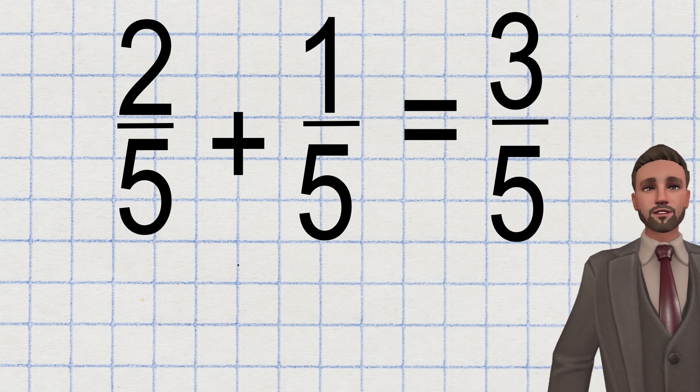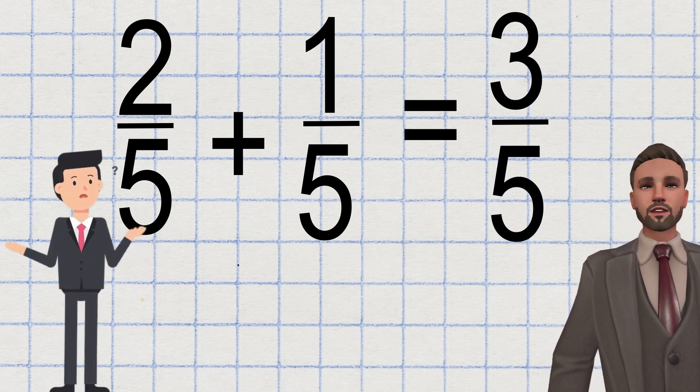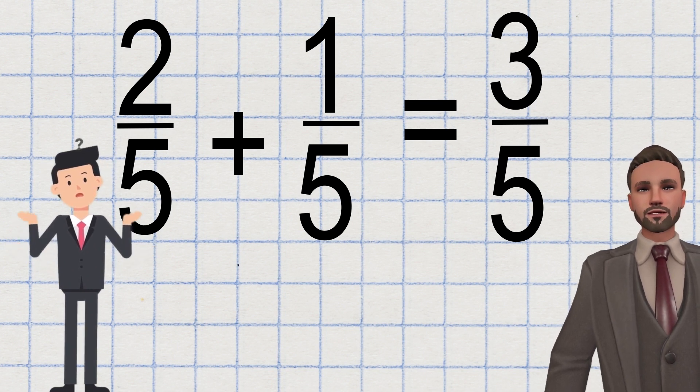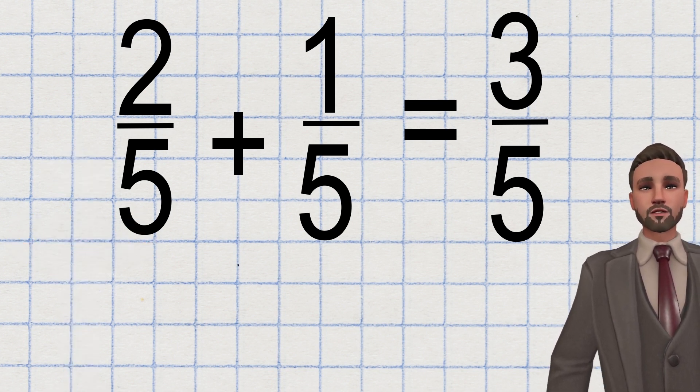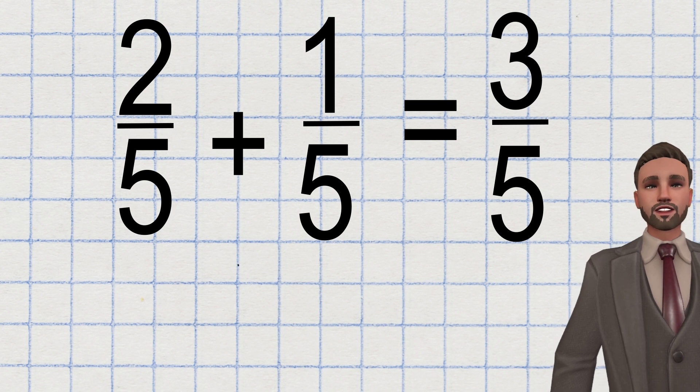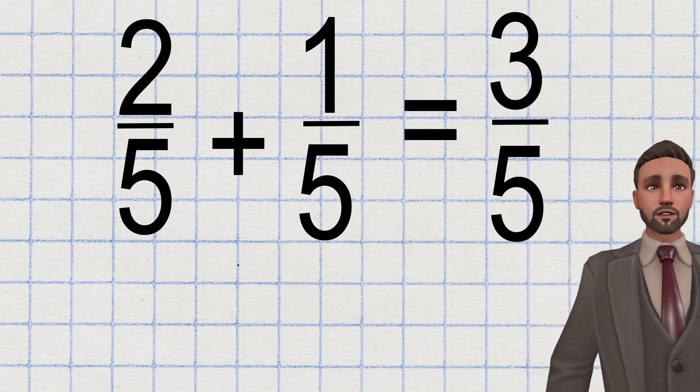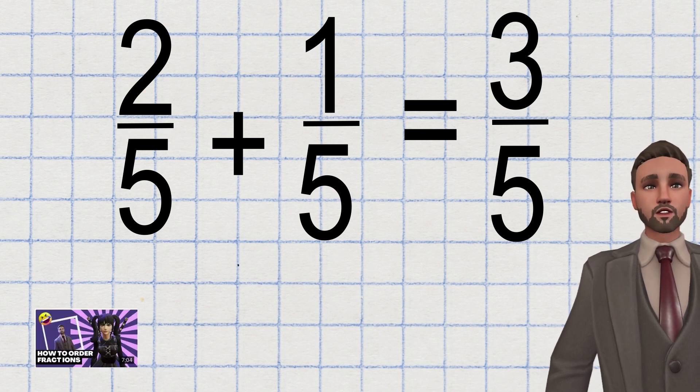giving an answer of three fifths. Some people ask, why don't you add the denominators if you're adding the numerators? And I could explain how the denominator represents what the whole is broken into and continue to give an in-depth explanation. And if that's what you want, great. Check out this video in the description below.